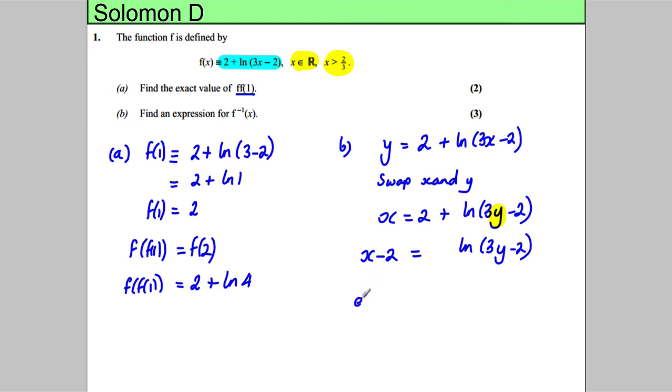So e to the power of x minus 2 equals 3y minus 2. We're going to make y the subject, so add 2 to both sides and divide by 3: e to the x minus 2, plus 2, all divided by 3.